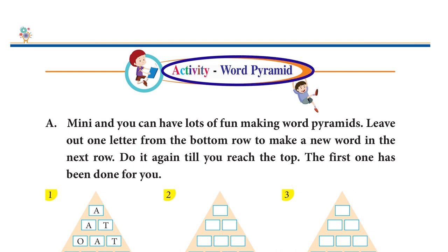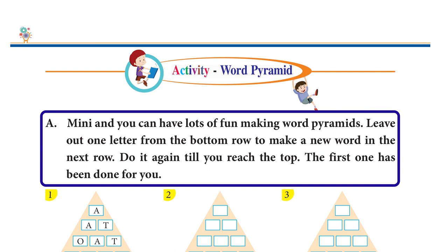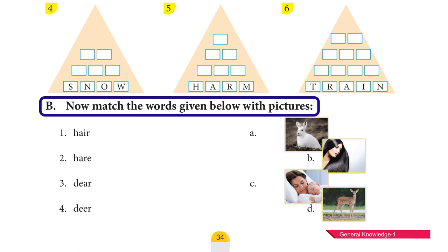Activity: Word Pyramid. Mini and you can have lots of fun by making word pyramids. Leave out one letter from the bottom row to make a new word in the next row. Do it again till you reach the top. Now match the words given below with pictures — do it yourself.